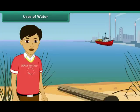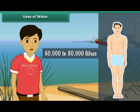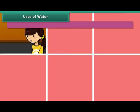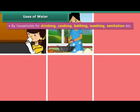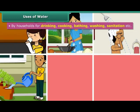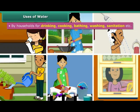We use water for various different purposes. On an average, a human being consumes about 60,000 to 80,000 liters of water in his lifetime. Water is used in households for drinking, cooking, bathing, gardening, washing, and cleaning purposes.